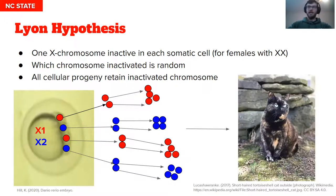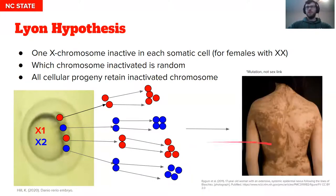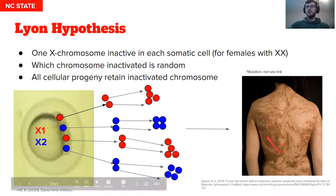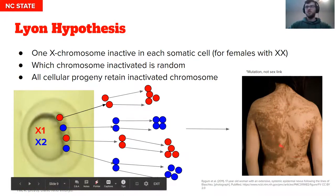Here's a tortoiseshell cat that has a mosaic for this orange and black coloration. We're going to talk more about these in a minute. This can also happen because of mutations. This is a human who had a mutation very early in her developmental period where you see a skin effect with pigmentation. And you can actually visualize the proliferation of the cells and see the mosaic, which is what's happening in the cats.